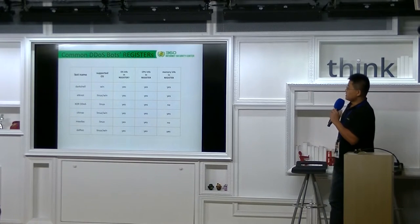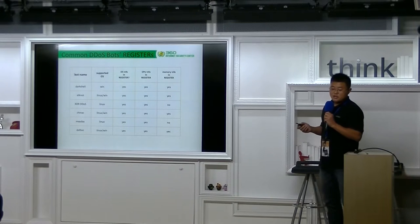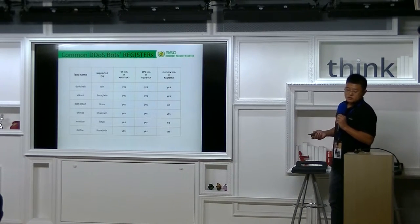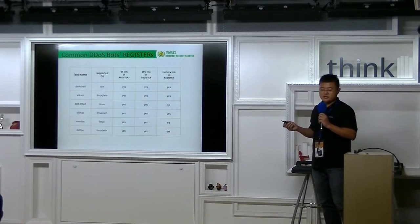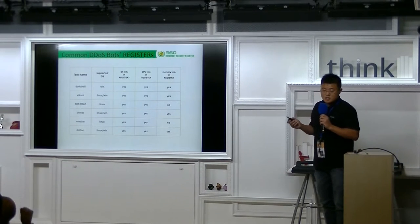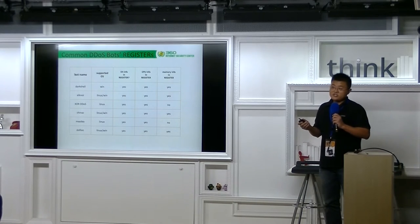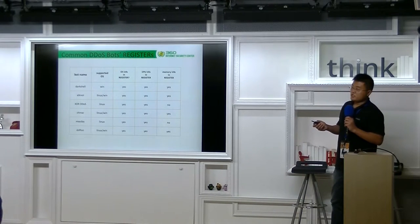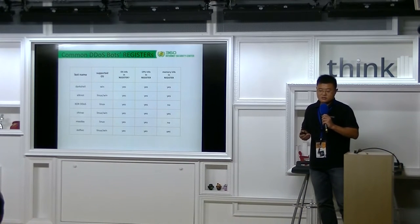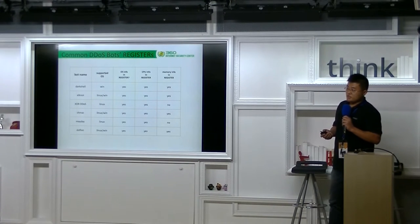Many new botnets use this message in their protocol. Here are some examples. The first column is bot name. They are Darkshell, Ioconota, XRDDS, China Z, Mayday, and Doflow. Some run on Windows, some run on Linux, and a few run across both platforms. As you can see, all their register messages include the operating system and CPU information. Except for XRDDS and Mayday, all include memory information in their register message.